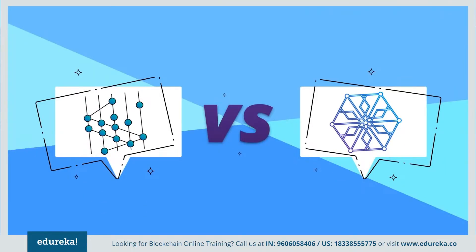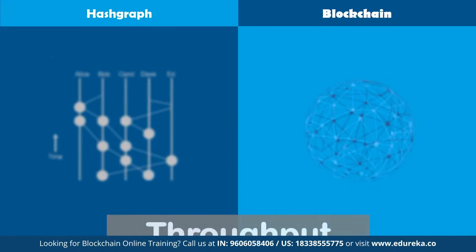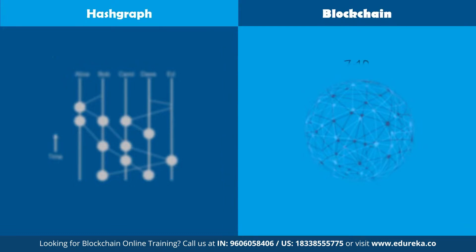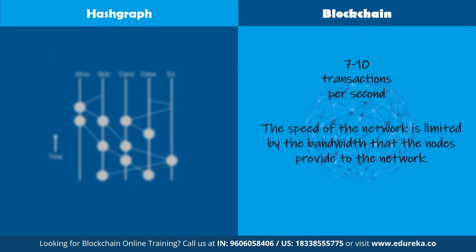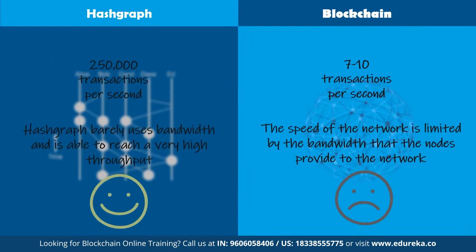The first point of comparison is throughput. Hashgraph improves significantly on the performance statistics of the Bitcoin network. Bitcoin operates at a maximum of seven transactions per second, while hashgraph is only limited by bandwidth and allows for over 250,000 transactions per second.